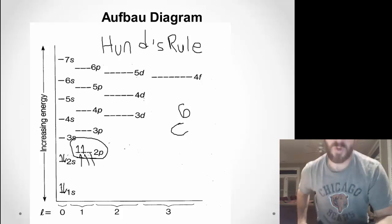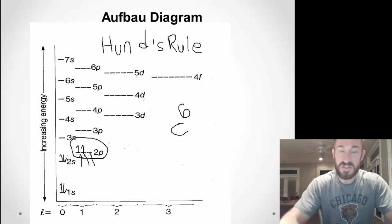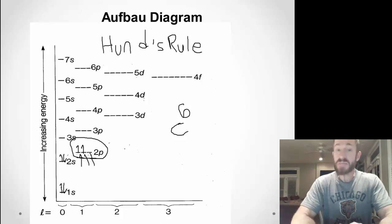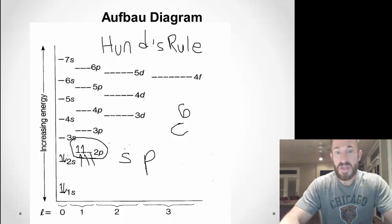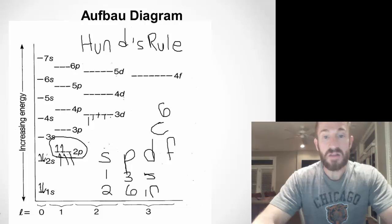What you should memorize is s, p, d, and f. In s, there is only one orbital — whether it's 1s, 2s, or 3s — and that holds two electrons. In p, there are three orbitals, each holding two electrons, for a total of six. In d, there are five orbitals, so d can hold ten electrons. In f, there are seven orbitals, and that holds fourteen electrons.